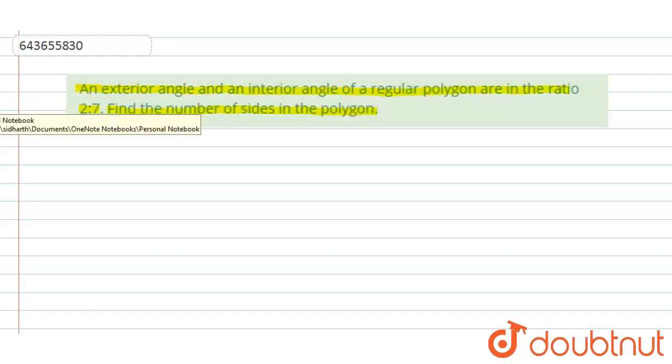So first of all, let us write the value of an interior angle in a regular polygon. Interior angle in a regular polygon is given by 180 into (n minus 2) over n. This is the value of interior angle in a regular polygon.